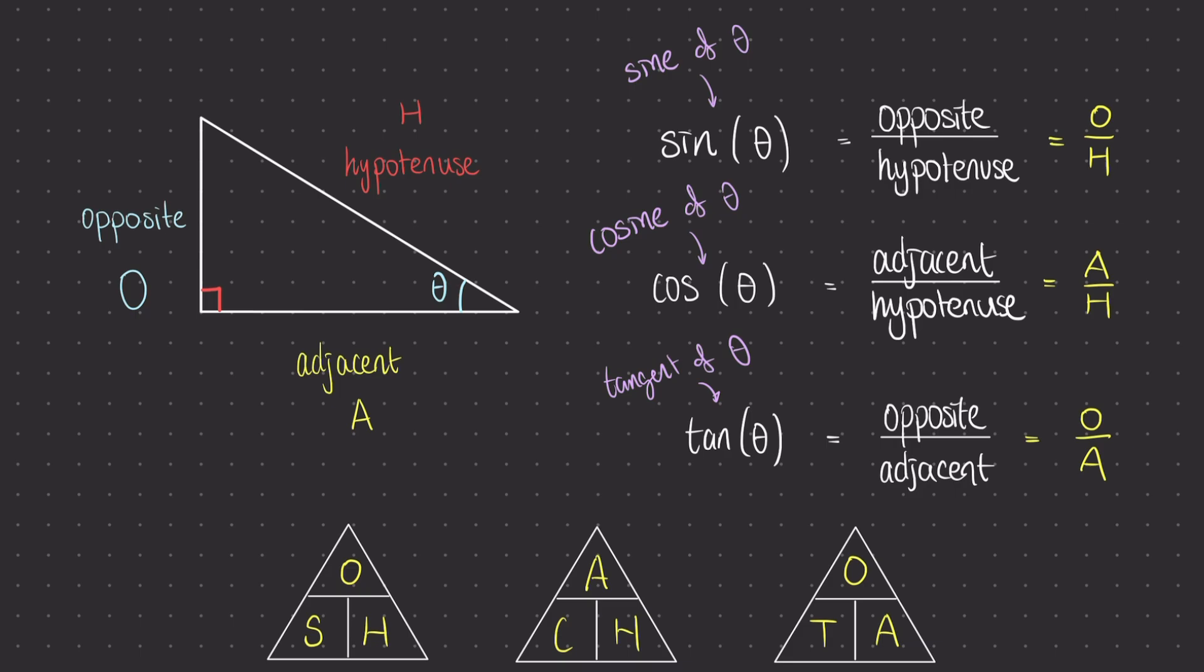So for example, if you would like to find the hypotenuse in the first formula, you cover that one up, the other two letters tell you what to do. So we would do the opposite side, divided by sine of the angle. For the middle triangle, if we wanted to find the adjacent side, we would need to do cosine of the angle, multiplied by the hypotenuse.